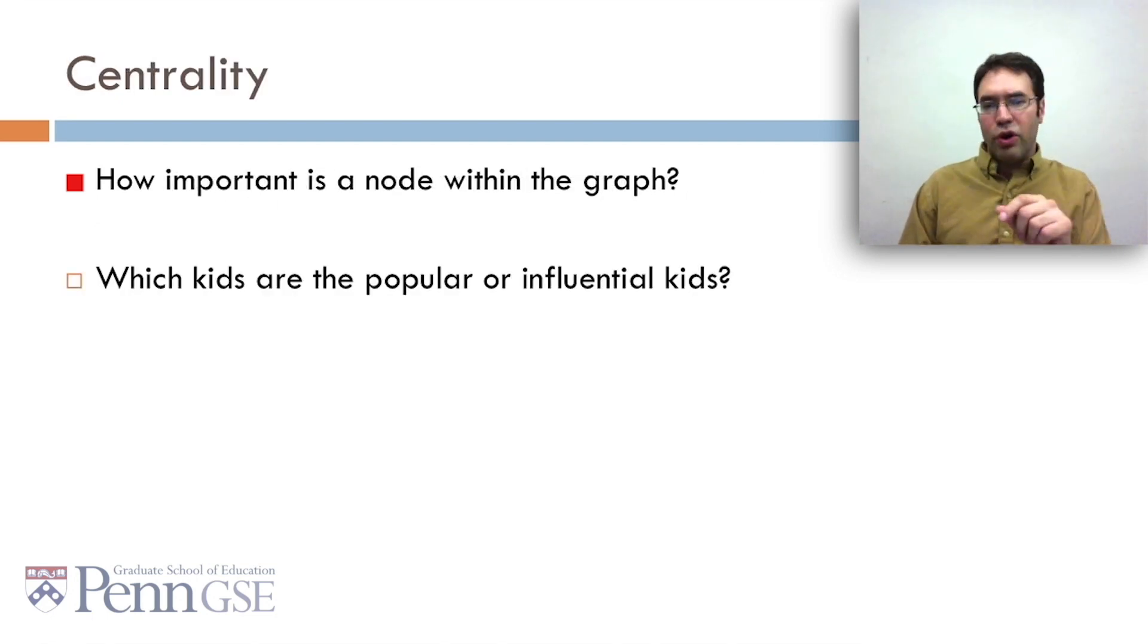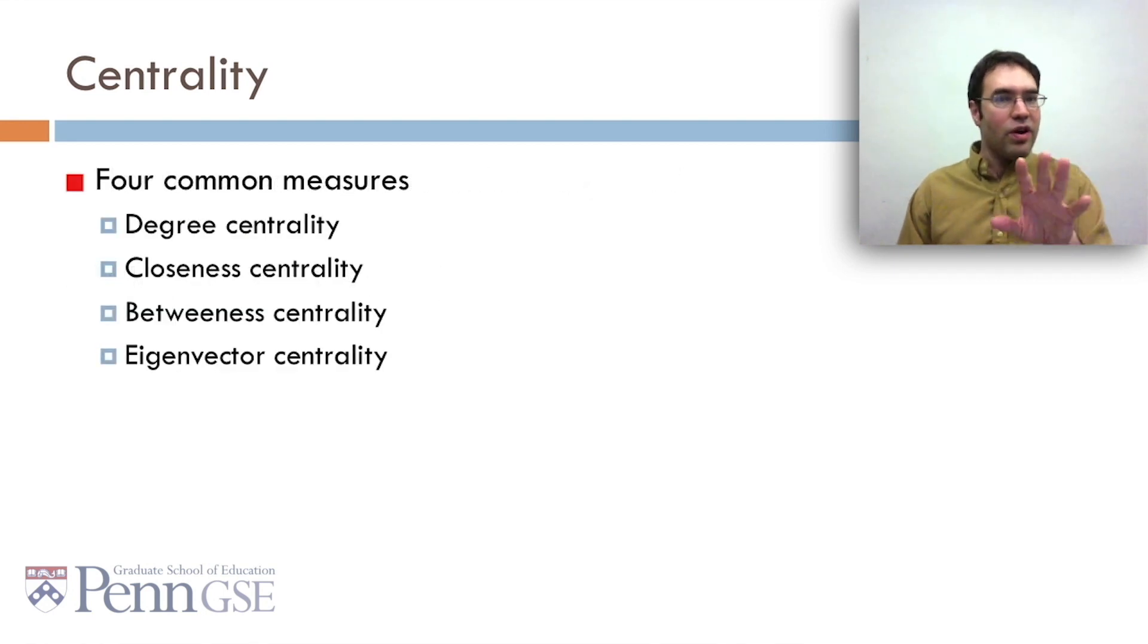Centrality. How important is a node within the graph? Which kids are the popular or influential kids? The kids who you want to persuade that math is cool and crack is whack. Well, there are four common measures of centrality. Degree centrality, closeness centrality, betweenness centrality, and eigenvector centrality.